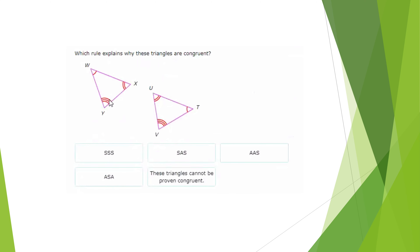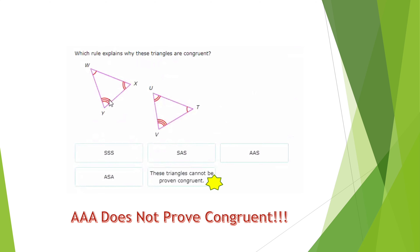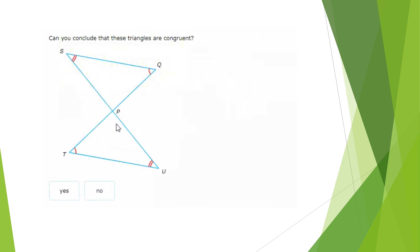Next, which rule explains why these triangles are congruent? What we would be looking at here is AAA — and the problem is AAA does not prove triangles congruent. It proves they're similar, but it doesn't prove congruent. So these triangles cannot be proven congruent. Can you conclude that these triangles are congruent? We have an angle and an angle, and there are vertical angles there for another angle — that's AAA. The answer is no, they cannot be proven congruent.